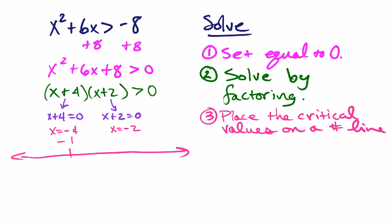Here's my number line — let's call this negative 4 and this negative 2. To test intervals, all you've got to do is pick an x value, any x value in that interval. To the left of negative 4, I'm going to pick x equals negative 5. In between negative 4 and negative 2, we can pick negative 3. And greater than negative 2, I'm going to pick x equals 0 because it's always easiest to plug in 0. If that number works in the inequality, then all numbers in that interval will work.